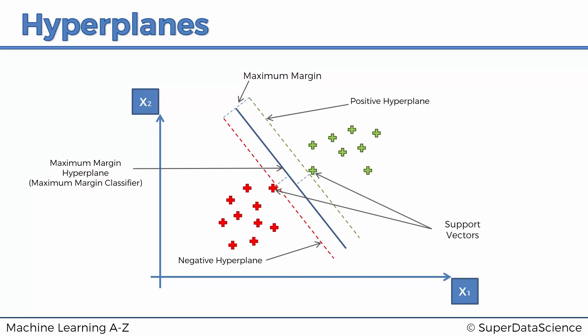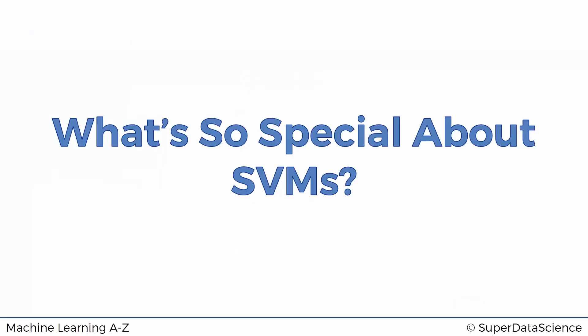That's how the support vector machine algorithm works. Of course, there's some complicated mathematics behind it, but the intuitive part is exactly this: we're working with a linearly separable data set, and we're just searching for the one with the maximum margin. Conceptually, it's actually a pretty simple algorithm. The question is, what's so special about SVMs? Why are they so popular?